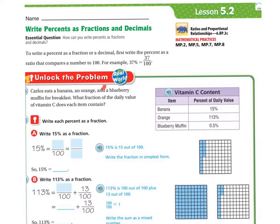Let's unlock the problem. Carlos eats a banana, an orange, and a blueberry muffin for breakfast. What fraction of the daily value of vitamin C does each item contain? If you look over here, we have vitamin C content. Our banana, orange, and blueberry muffin. Percentage of daily value is 15%, 113%, and 0.5%.